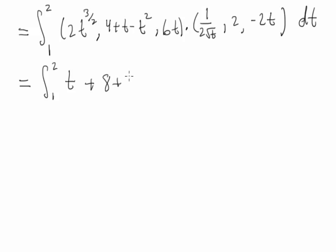So we have 8 + 2t - 2t². And then lastly we have 6t times -2t, so I have -12t².